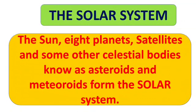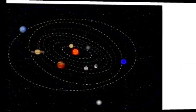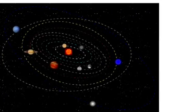This solar system consists of the sun, earth, planets and their satellites, and some other celestial bodies known as asteroids, meteoroids, and comets, which also come in the solar system.